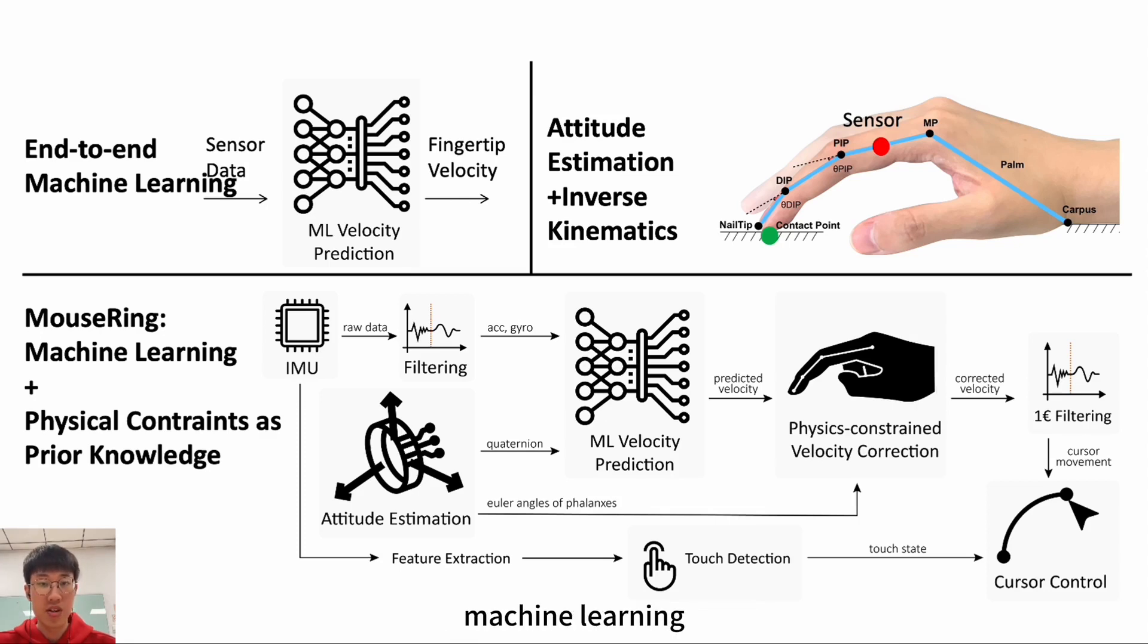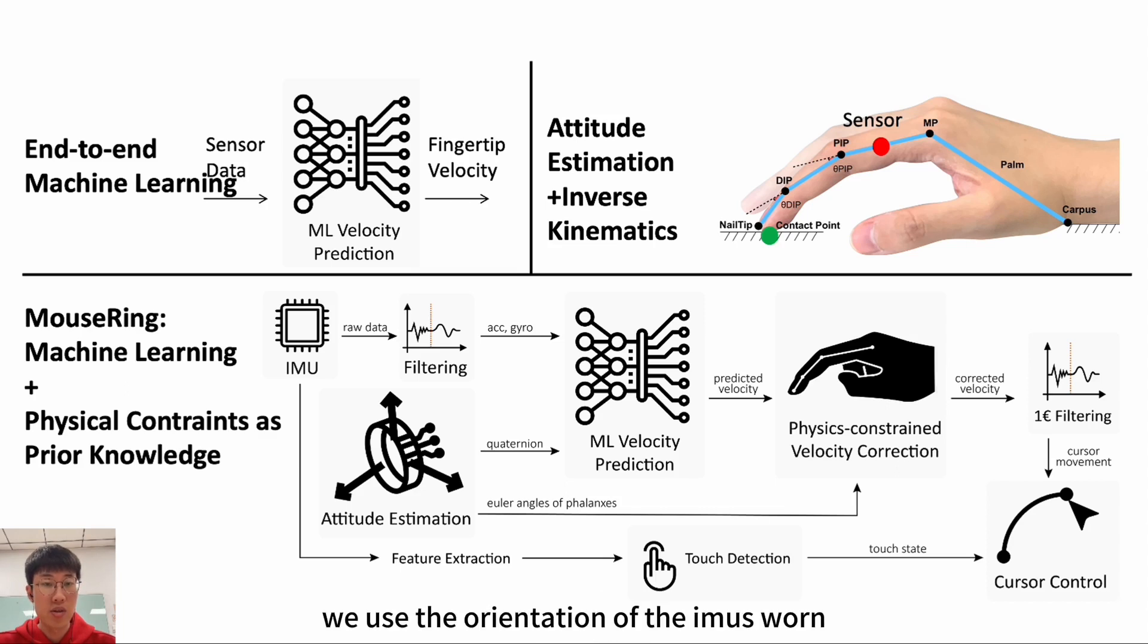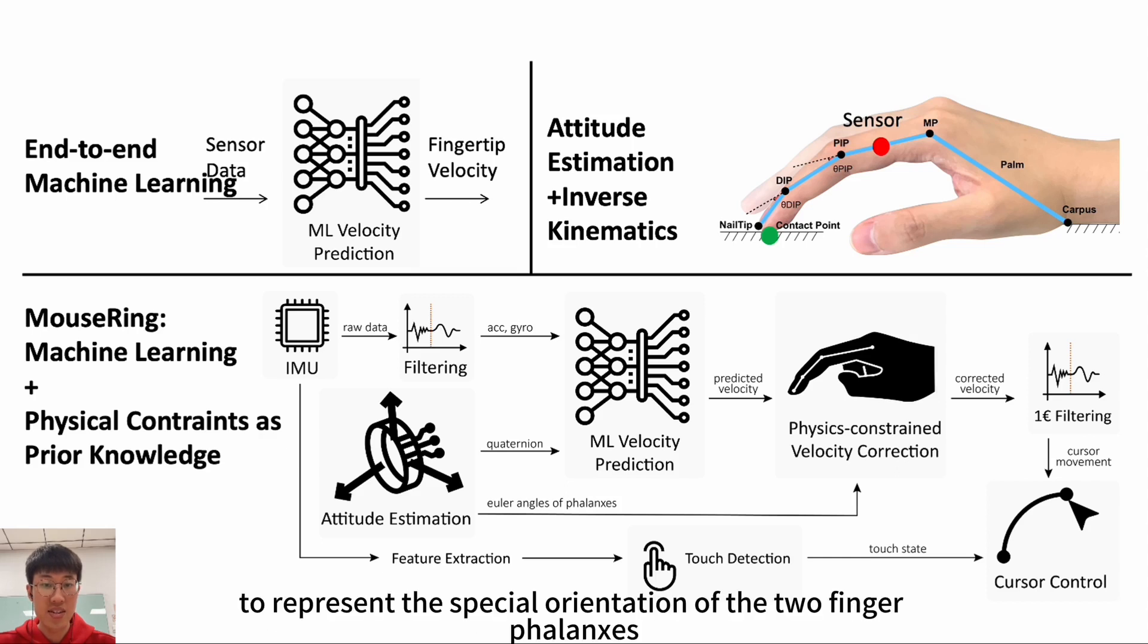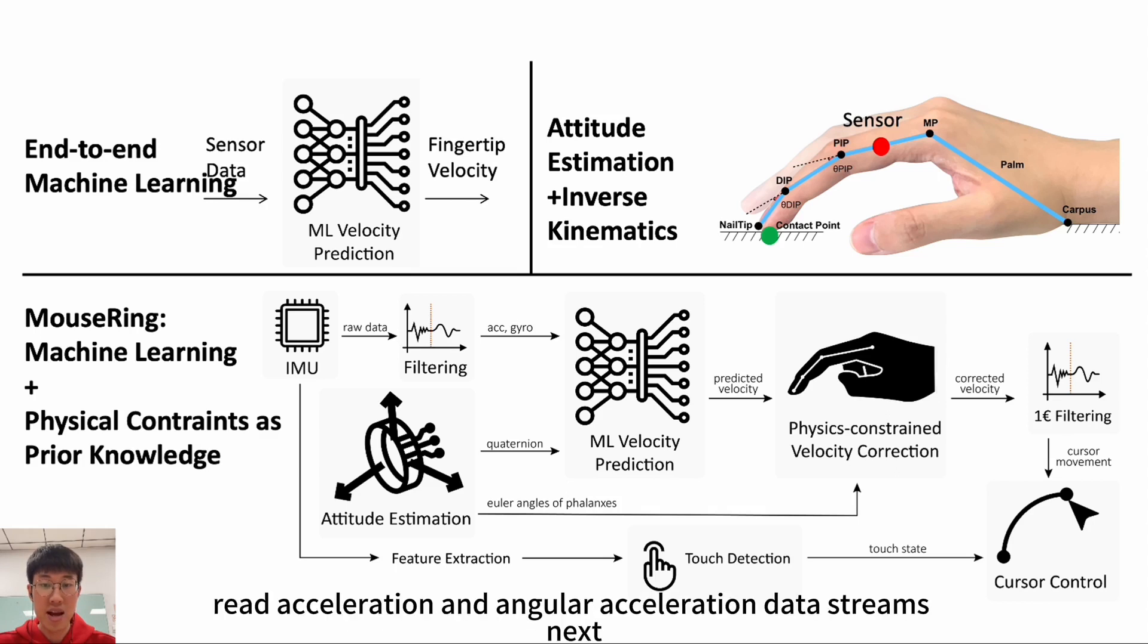We believe that machine learning and physical modeling can be integrated. Finger motion patterns during finger sliding and the inherent structure of joints can provide beneficial physical knowledge. This led us to enhance motion perception accuracy by integrating physical priors into machine learning models. The image below introduces the algorithm pipeline of MouseRing. We use the orientation of the IMUs worn on the intermediate and proximal phalanx of the index finger to represent the spatial orientation of the two finger phalanxes.